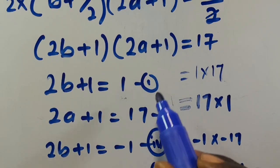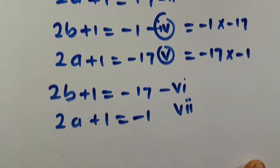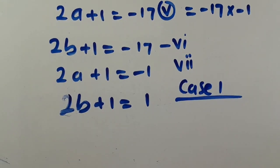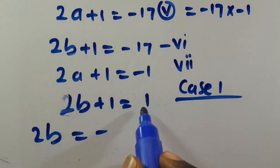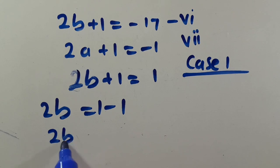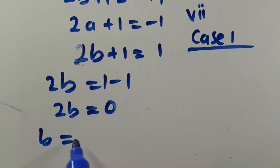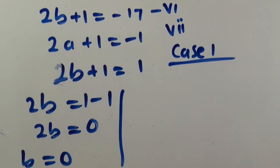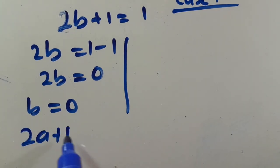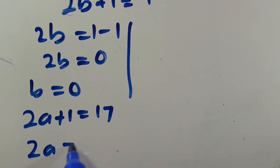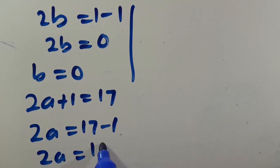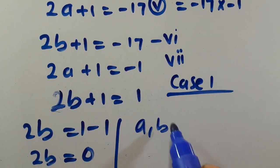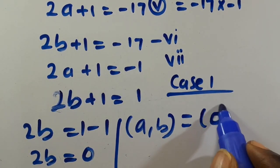Starting with equations 1 and 2 (positive case 1): from 2b plus 1 equals 1, we get 2b equals 0, so b equals 0. From 2a plus 1 equals 17, we get 2a equals 16, so a equals 8. Therefore, for this first case, a comma b equals 8 comma 0.